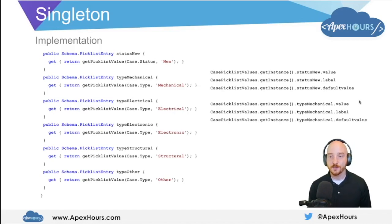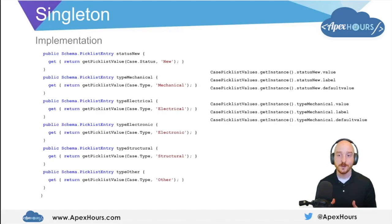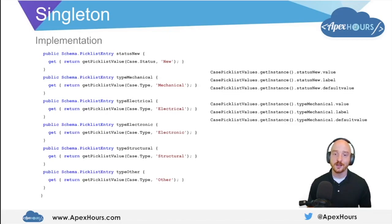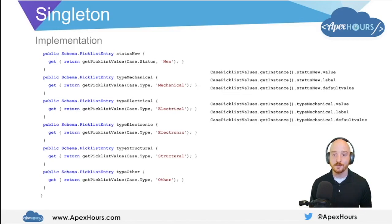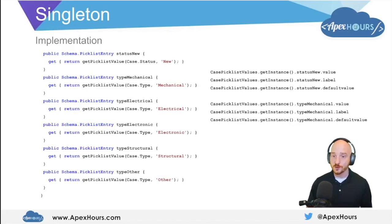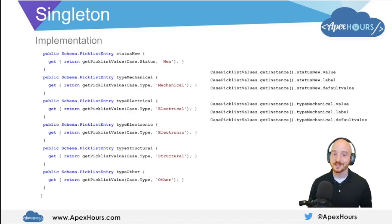That's a little bit about the singleton pattern. It's a very useful pattern — remember it's a creational pattern, meaning it helps us define how objects at runtime are instantiated. It has this unique property whereby it enforces programmatically that there can only ever be one instance of an object at runtime, and we use this to make sure we can perform computationally expensive tasks or share constant values across the entire scope of the Apex transaction in a way that is performant and doesn't blow up our memory usage.